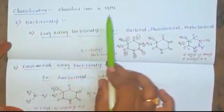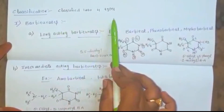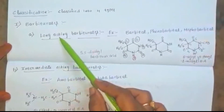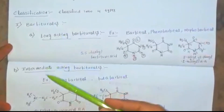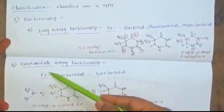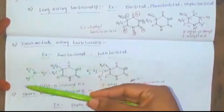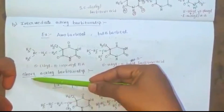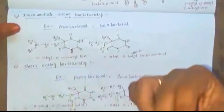Barbiturates are again classified into four types: long-acting barbiturates, intermediate-acting barbiturates, short-acting barbiturates, and ultra short-acting barbiturates.